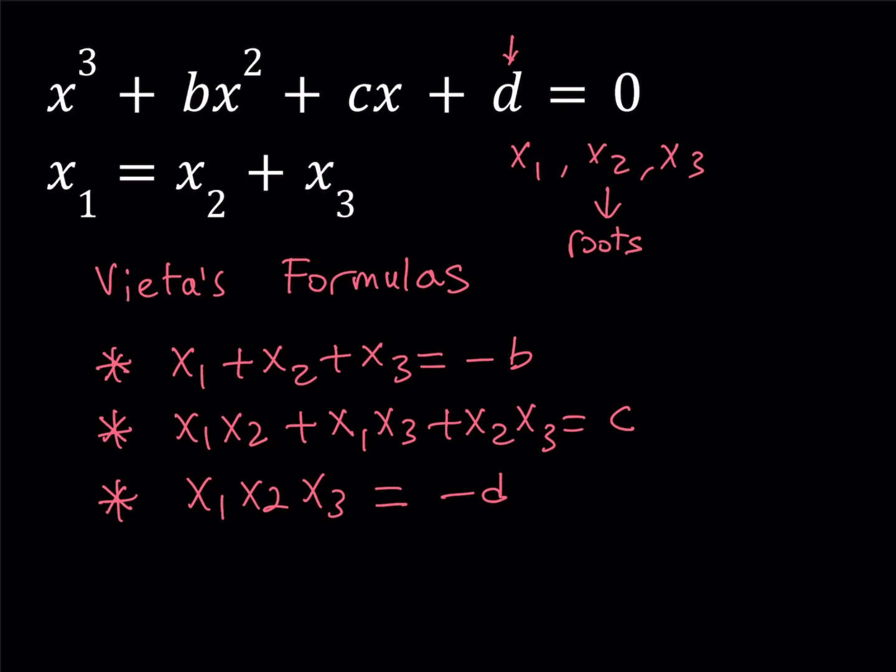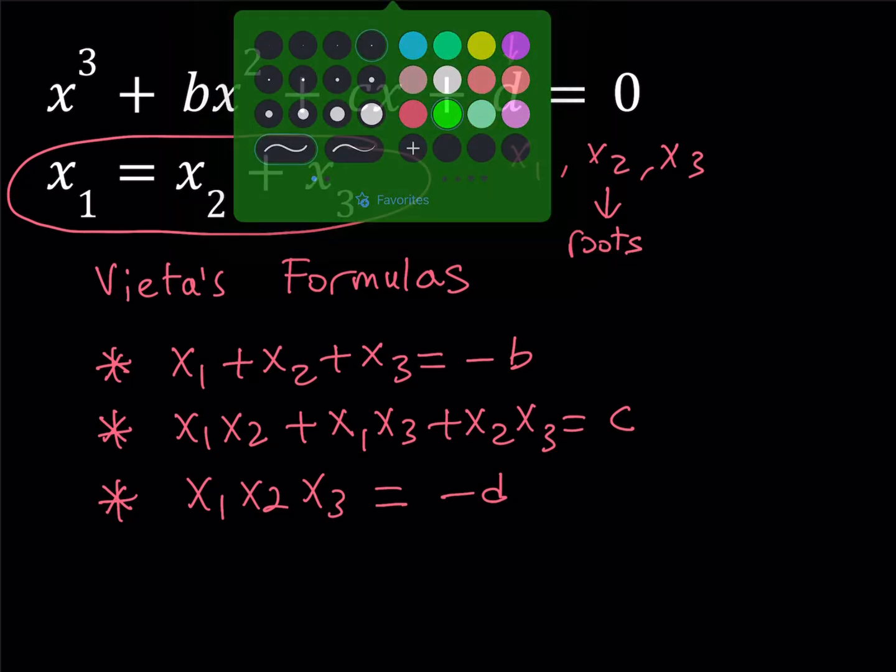So we have this relationship that's given to us which works with this equation. If they didn't give us this requirement, we would have to solve a general cubic, which could be done by Cardano's method. But in this case, we're not going to use it. We're going to be using Vieta's formulas. Let's see how this goes.